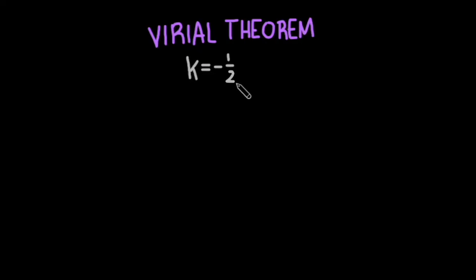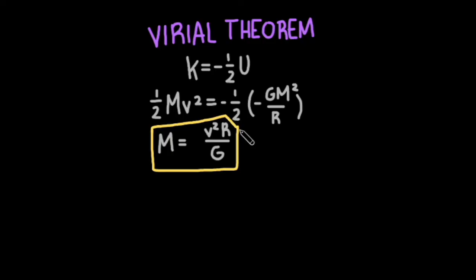Say we want to calculate the mass of a galaxy. Well, we can approximate its kinetic energy as 1 half mv squared and its potential energy as gm squared divided by its radius. Solving for mass, we get m equals velocity squared times r over the gravitational constant g. Assuming we know the mean velocity and the radius of the galaxy, we can calculate its mass. Great!